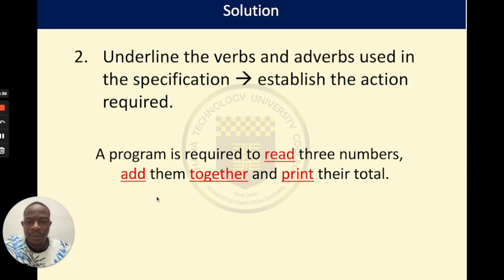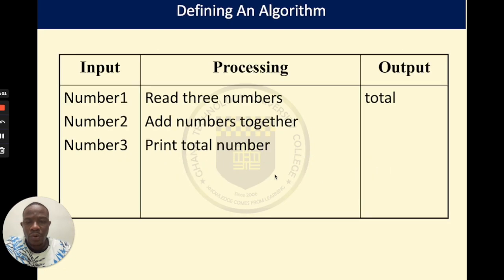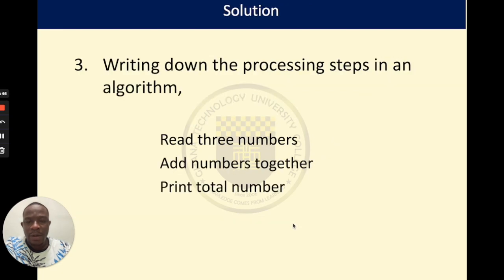How do we identify the processing steps? First, try to identify all the verbs in the problem. Looking at our problem, we're asked to read, add, and then print. This points us to exactly what is being required of us. So in the processing section, we fill it with: read, add, and then print. We are supposed to read three numbers, add the three numbers together, and then print the total. Once we have identified all of this, we can write our algorithm: read the three numbers, add numbers together, print out the total. With these three lines of instructions, we have successfully developed our first algorithm.